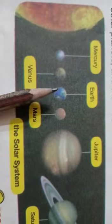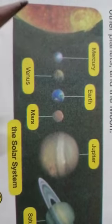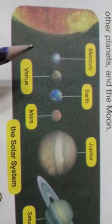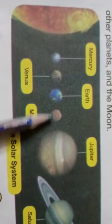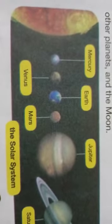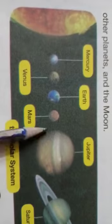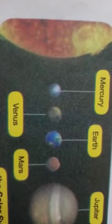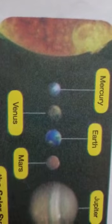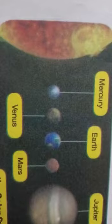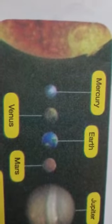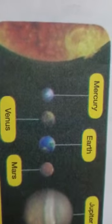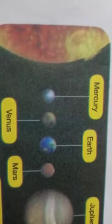The Earth is a planet in the solar system along with the Sun, other planets and Moon. The Sun is a star and a hot ball of gases. The Sun gives us heat and light.